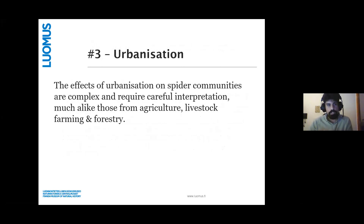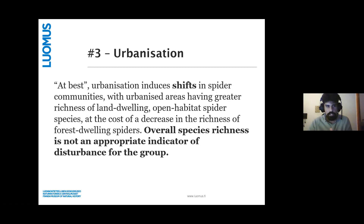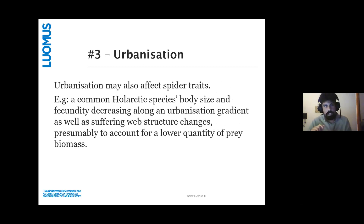For urbanization, which ranked third globally and second for the Neotropics, the effects are also very complex and require careful interpretation. Similarly to agriculture, it induces shifts in spider communities — urbanized areas have greater proportions and richness of land-dwelling open-habitat spider species but a decrease in the richness of forest-dwelling spiders. The big takeaway is that overall spider richness is not an appropriate indicator of disturbance for the group. Additionally, urbanization might affect spider traits — in a common Palearctic species, fecundity and body size changed along an urbanization gradient, and web structure changes were also present, presumably to account for lower prey quantity.